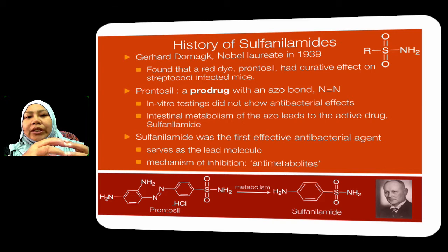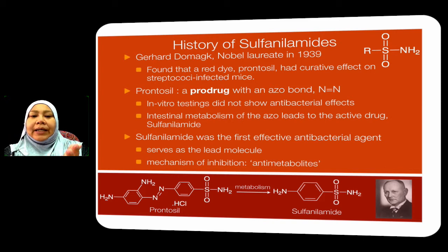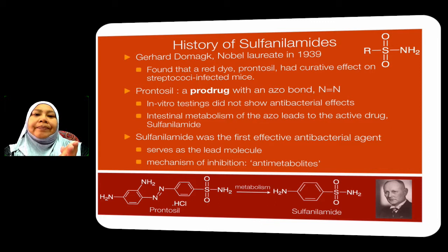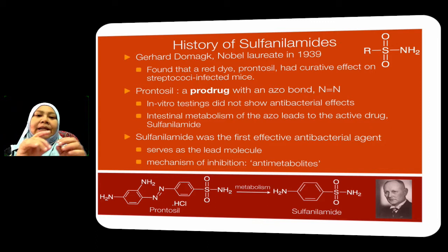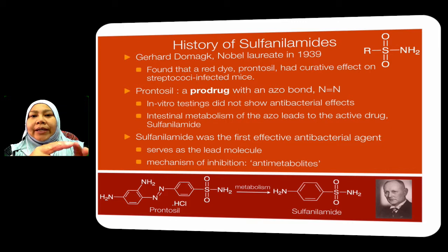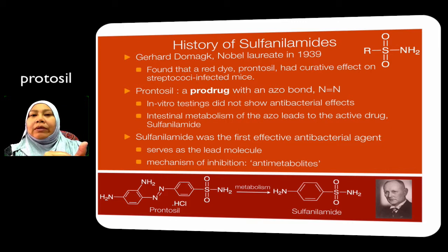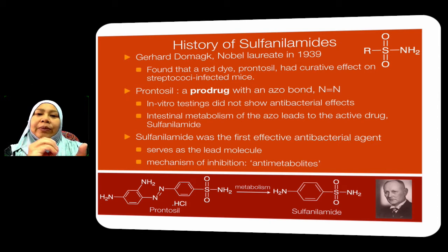Sulfonamides were actually discovered by a scientist called Domagk. He discovered the prodrug of sulfonamide. What he found was a red dye called Prontosil that can cure mice infected with Streptococcus.